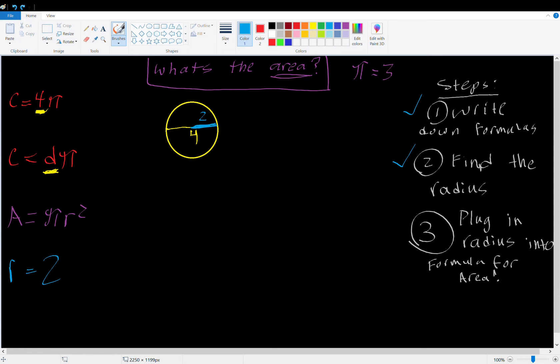R is going to equal to 2. Y lo vamos a meter aquí, en esta formula. So, let's go back to the A is equal to pi. And then, our radius is 2. Our radius is 2 squared. So, we plugged it in. We plugged it into the formula of an area.